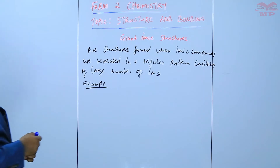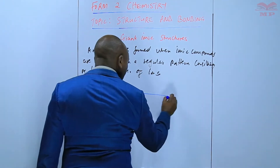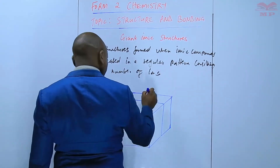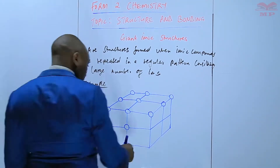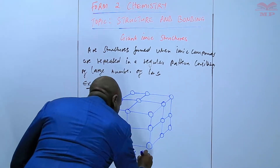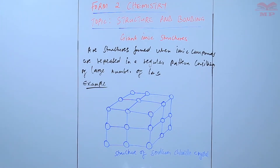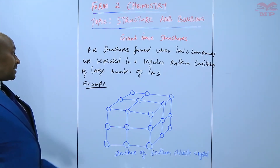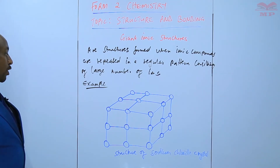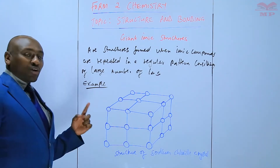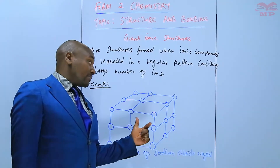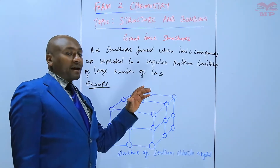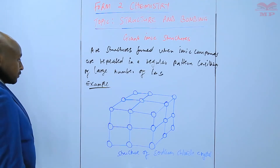We will have a structure of sodium chloride crystal. This structure of sodium chloride crystal is three-dimensional. In this three-dimensional structure, we will find that each sodium ion is surrounded by six chloride ions, and each chloride ion is surrounded by six sodium ions in a repeated manner to form a three-dimensional structure.